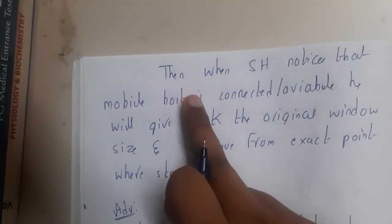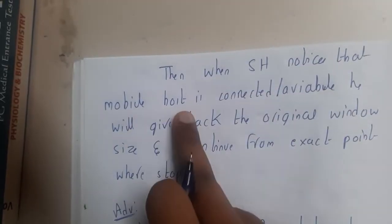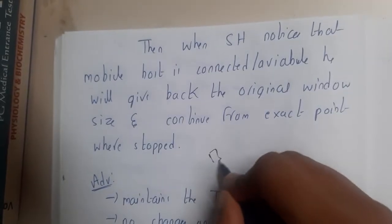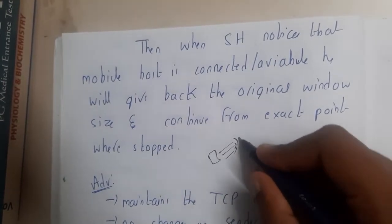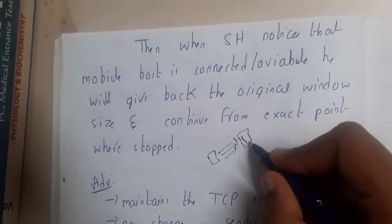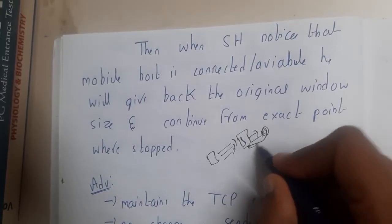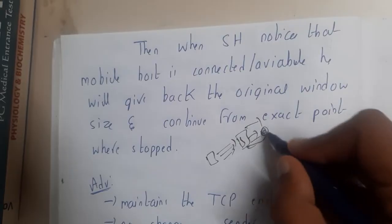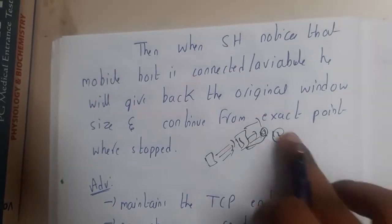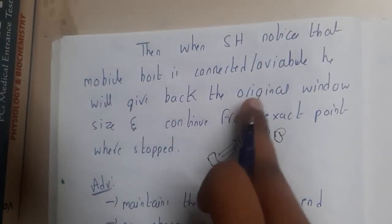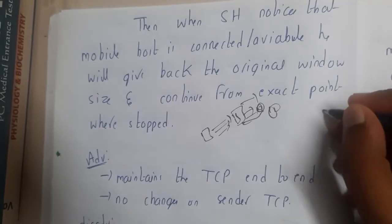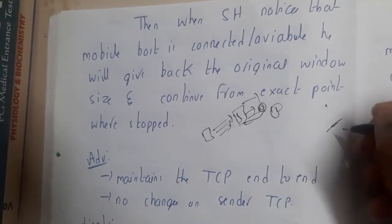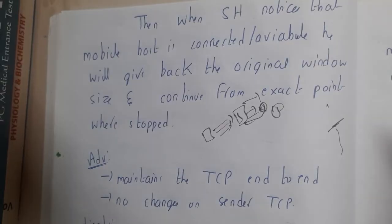When the SH notices the mobile host is connected again — for example, the mobile starts requesting packets it missed, like the 35th or 36th packet — the supervisor will say the mobile device is back and reassign the original window size of 12 and start sending the data again. It gives back the original window size and continues from the exact point where it stopped. So if packets 1 to 30 were sent, they will continue from packet 31 without any technical issues.